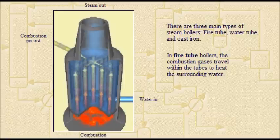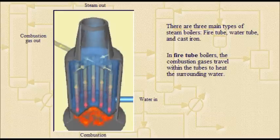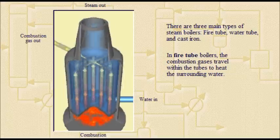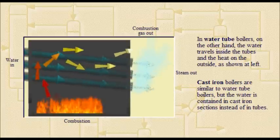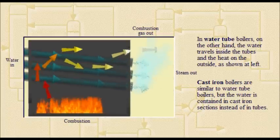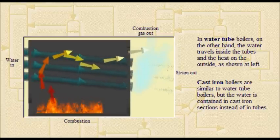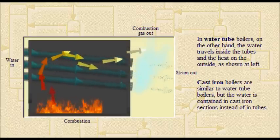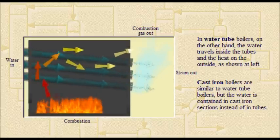There are three main types of steam boilers: fire tube, water tube, and cast iron. In fire tube boilers, the combustion gases travel within the tubes to heat the surrounding water. In water tube boilers, the water travels inside the tubes. Cast iron boilers are similar to water tube boilers, but the water is contained in cast iron sections instead of in tubes.